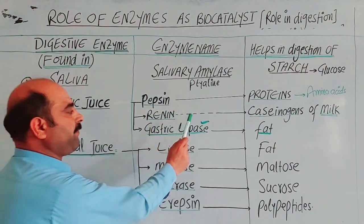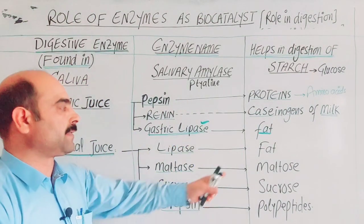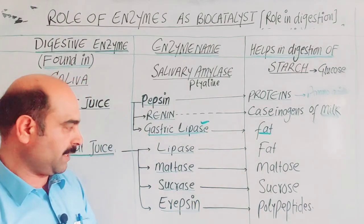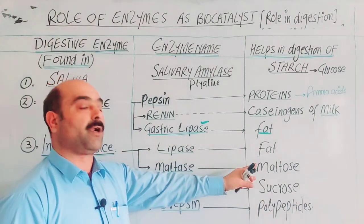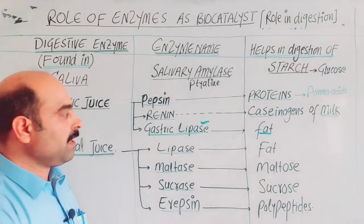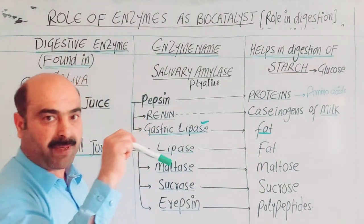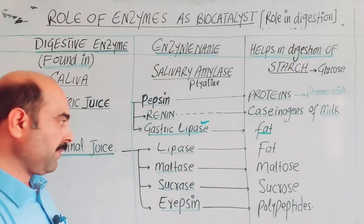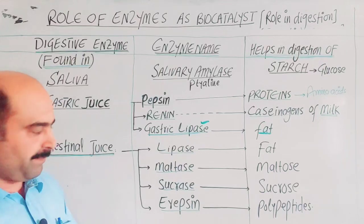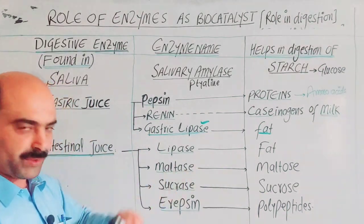Lipase is related to fat digestion — any remaining fat will be digested by lipase. Maltase converts maltose sugar into glucose. The substrate of maltase is maltose. Sucrase is related to sucrose, a disaccharide sugar, and the sucrase enzyme converts sucrose into glucose.